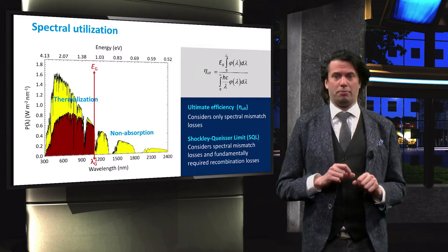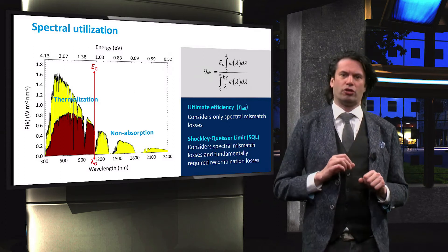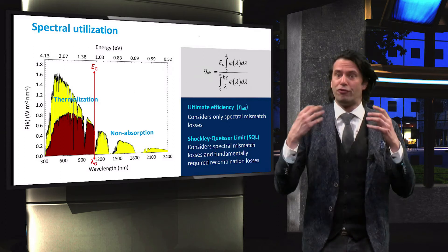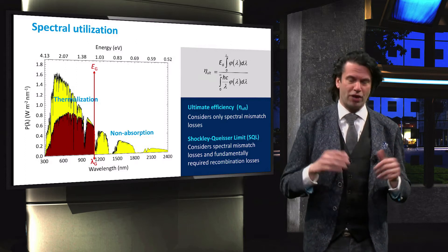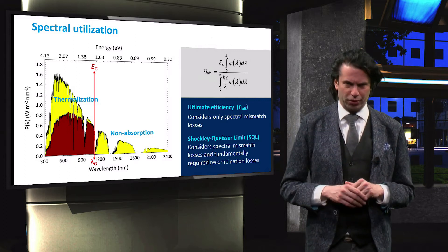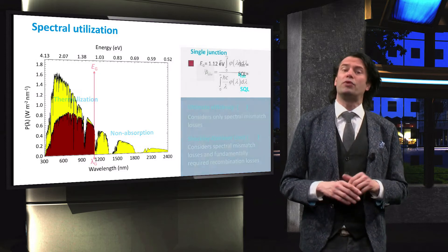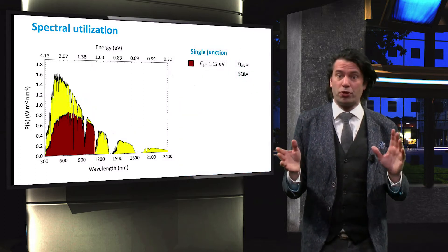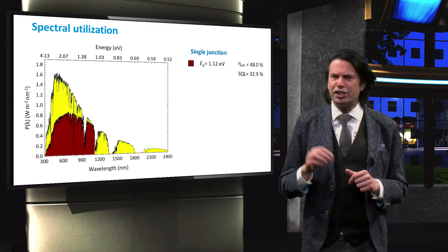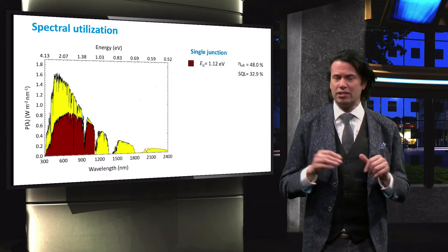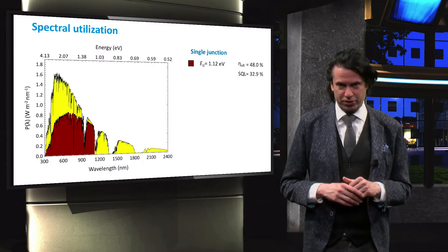The Shockley-Queisser limit also considers the recombination losses that are fundamentally required since the cell temperature is above absolute zero. For a single junction solar cell with an optimal bandgap energy of 1.12 eV, the ultimate efficiency is about 48 percent and the Shockley-Queisser limit is roughly 33 percent.